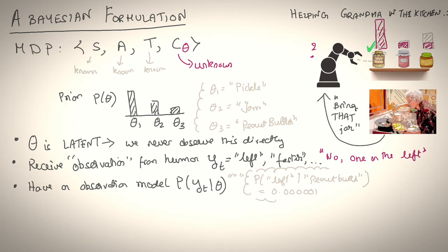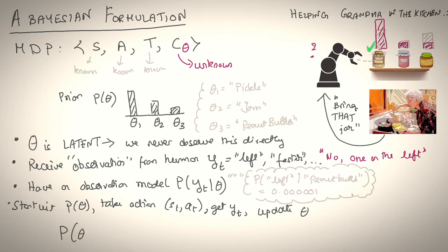Observations y_t, which could be, you know, go left or it could be emotional observations like move faster and so on. Finally, we have an observation model P(y_t | theta) that tells us the probability of an observation given a parameter theta. For example, given that grandma wanted the peanut butter, what is the probability of her saying left? And that would be very low. That's how the robot is able to update its belief.